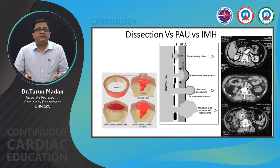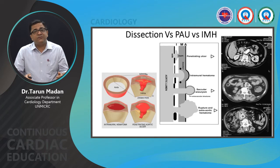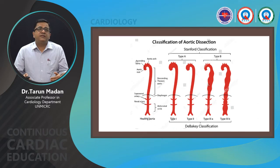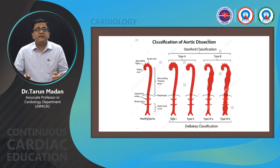Aortic dissection is classified by the Stanford system: type A is proximal with distal extent, type B is distal only. DeBakey further classifies into types 1, 2, 3A, and 3B. Type 1 involves the aortic root and ascending aorta; type 2 extends distally from proximal origin; type 3A is thoracic; type 3B is thoracic plus abdominal, with supra- and infradiaphragmatic extent.